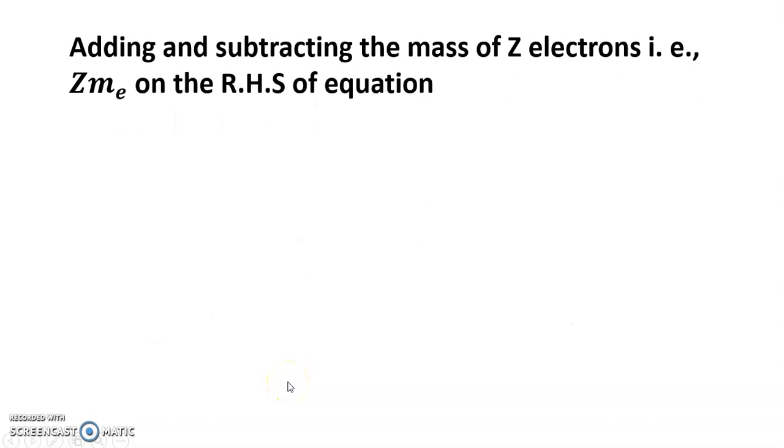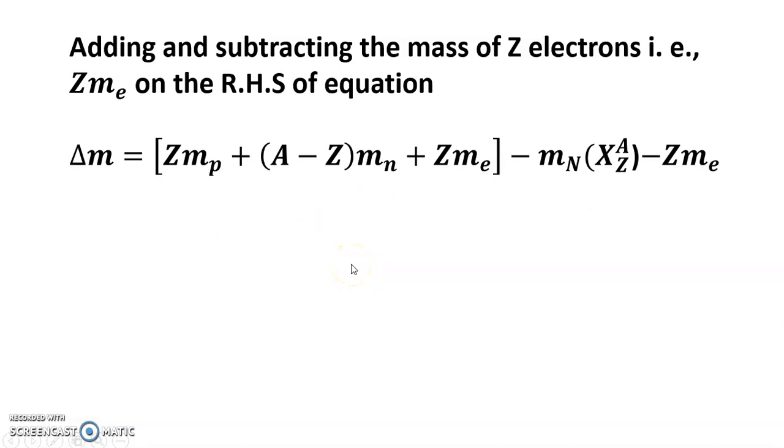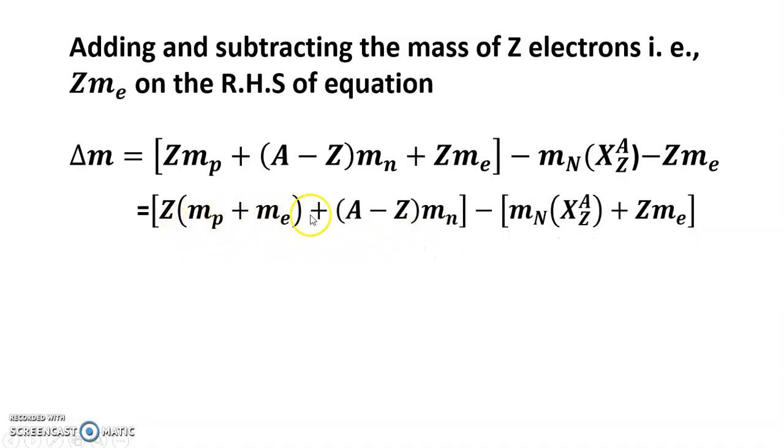Adding and subtracting the mass of Z electrons, that is Z m_e on the right hand side of equation. Del m equals Z m_p plus A minus Z m_n plus Z m_e minus m_N of X_Z^A minus Z m_e, which equals Z times m_p plus m_e plus A minus Z m_n